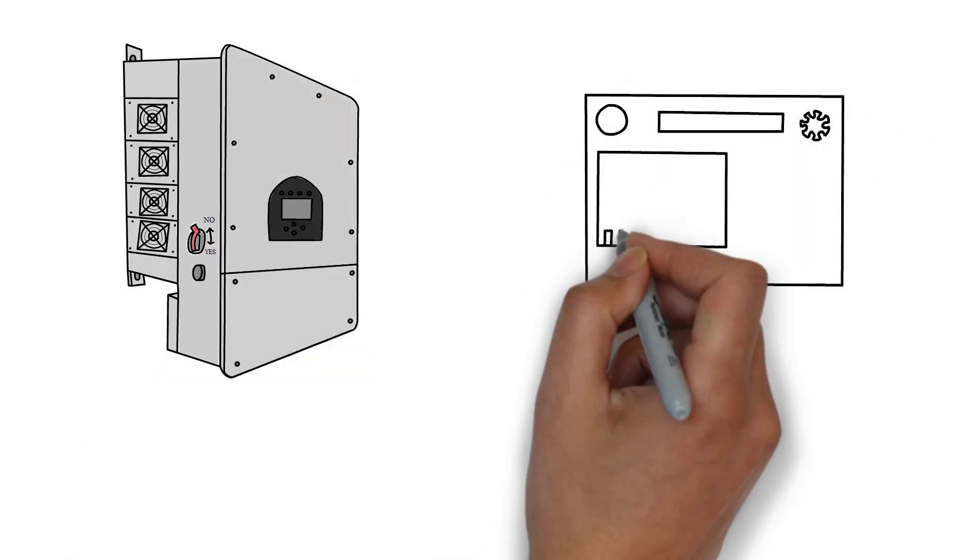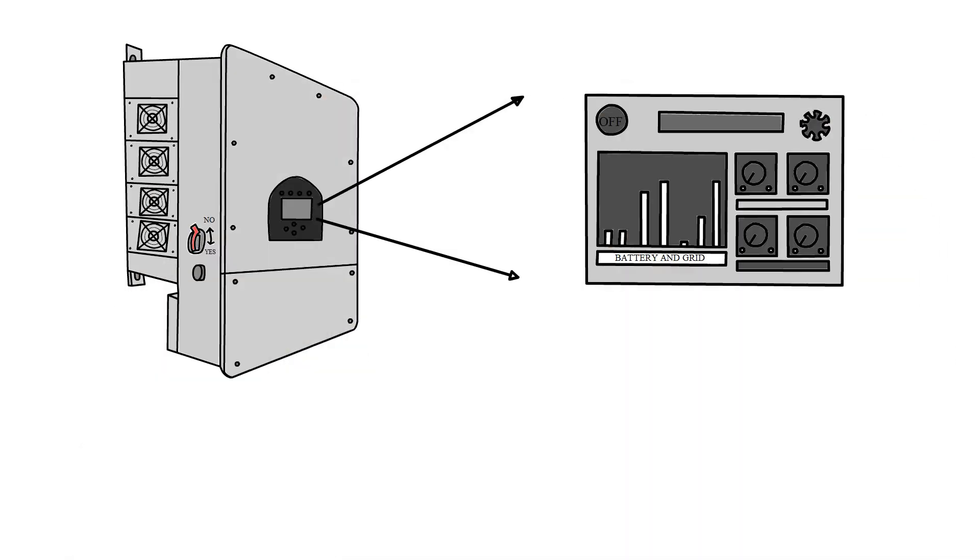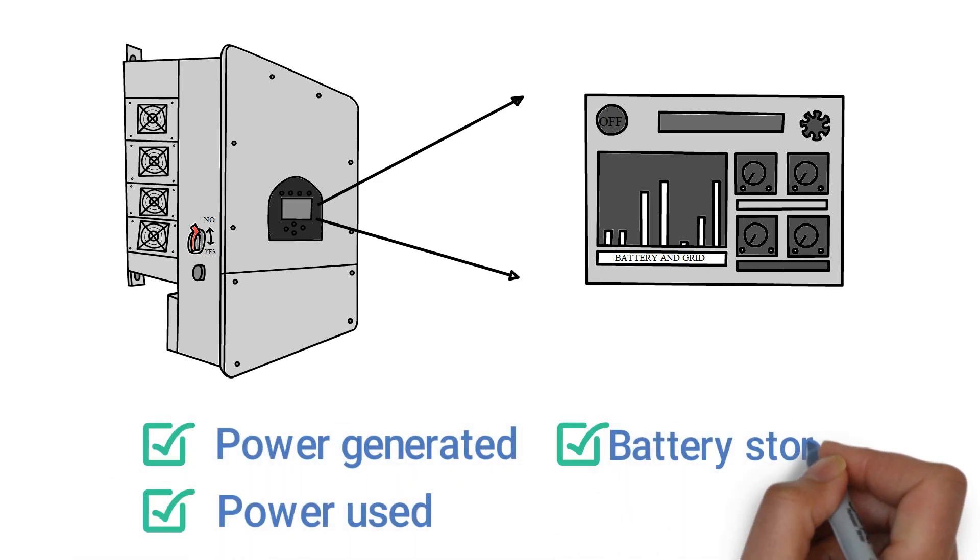The SunSync Parity Inverter provides a low-maintenance system with easy-to-read screens that can show the exact status of power generated, power used, battery storage, and battery discharge.